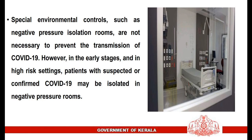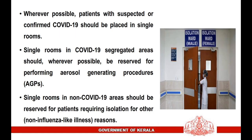Special environmental controls, such as negative pressure isolation rooms, are not necessary to prevent the transmission of COVID-19. However, in the early stages and in high-risk settings, patients with suspected or confirmed COVID-19 may be isolated in negative pressure rooms. Wherever possible, patients should be placed in single rooms. Single rooms in COVID-19 segregated areas should, wherever possible, be reserved for performing aerosol-generating procedures. Single rooms in non-COVID-19 areas should be reserved for patients requiring isolation for other reasons.